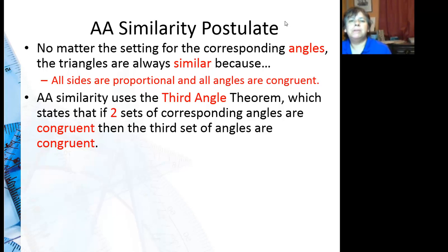Because if I say one's 100 and one's 50, you can automatically tell me what the third angle is. So that's using the third angle theorem. That is, if two sets of angles are congruent, then the third set of angles has to be congruent.